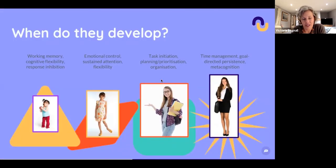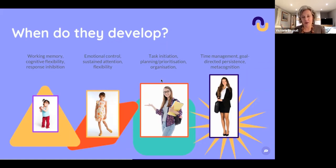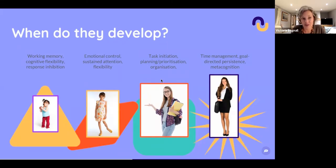The executive functions develop over time. In the toddler years, working memory, cognitive flexibility, and response inhibition start coming online — you can see it in object permanence, where a toddler starts noticing when something falls off their high chair and plays that throwing game. That's the working memory starting to form. Also things like not crying when mummy leaves the room shows response inhibition beginning to develop.